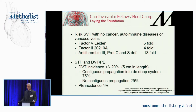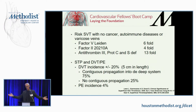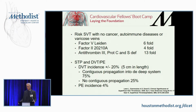Antithrombin 3 — a lot of the coagulation specialists have quit calling it 3 and just call it antithrombin. If you have deficiencies of protein C, protein S, or antithrombin, those are all endogenous anticoagulants that shift you more towards a clotting state.